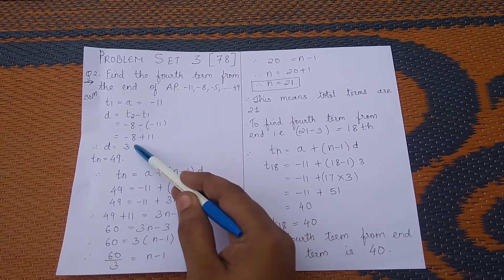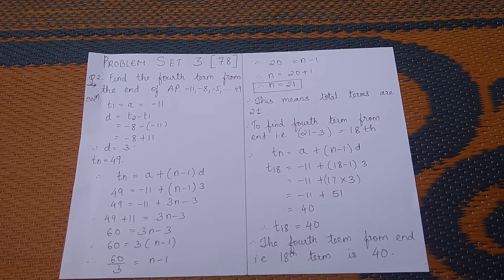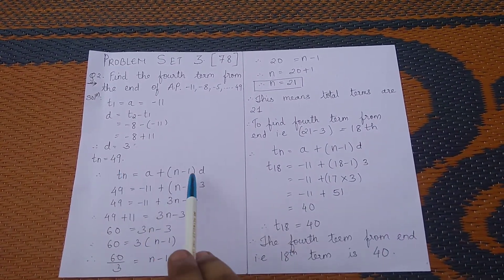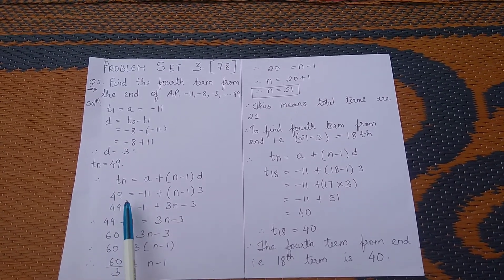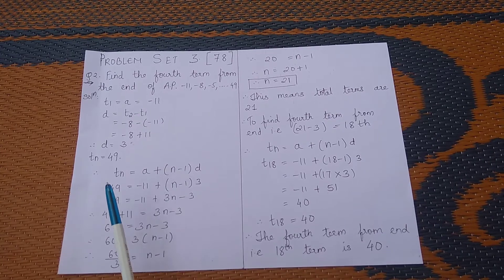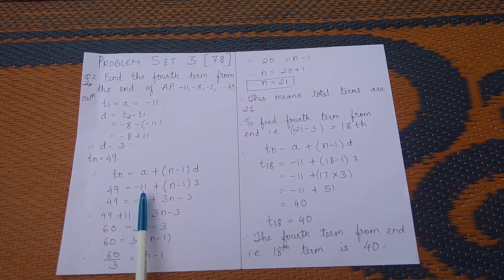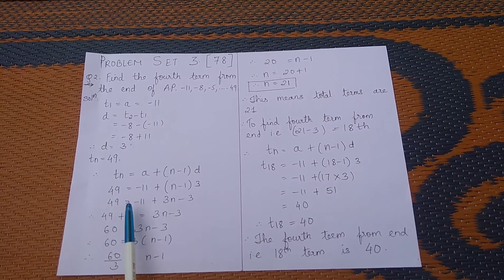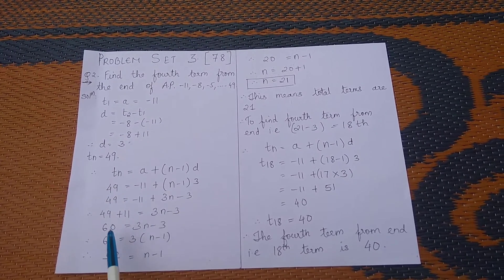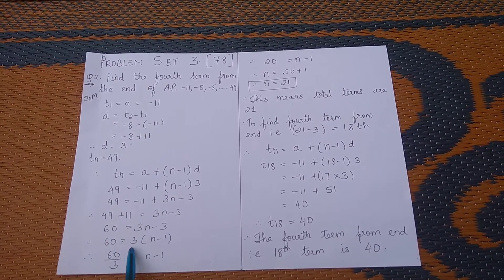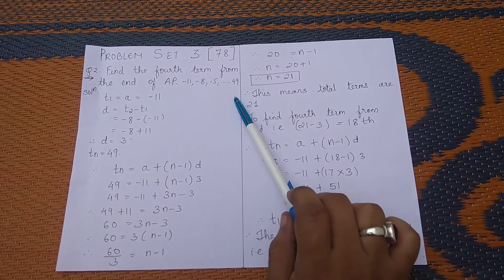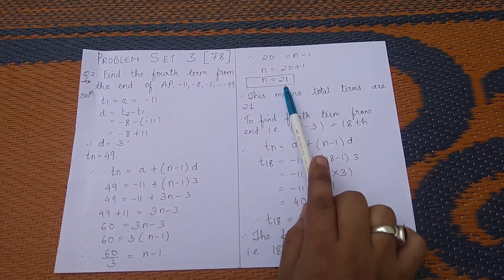The last term in the AP is 49. We'll use the formula tn = a + (n-1)d and set tn = 49. So 49 = -11 + (n-1)×3, which gives 60 = 3(n-1), so n-1 = 20 and n = 21. The total number of terms is 21.